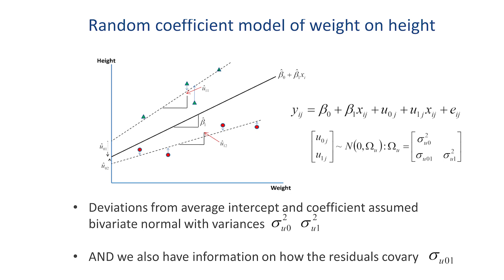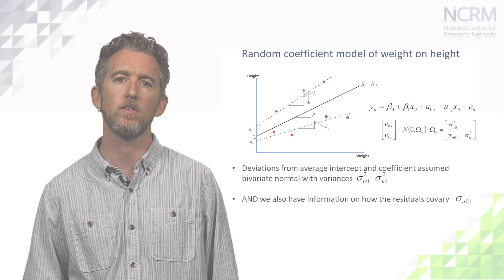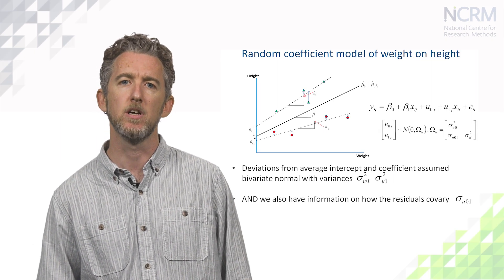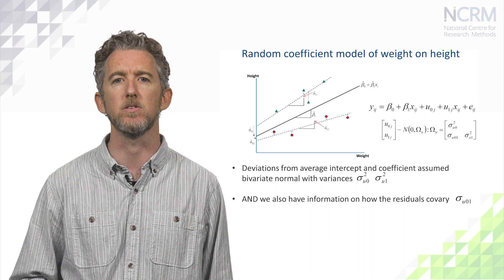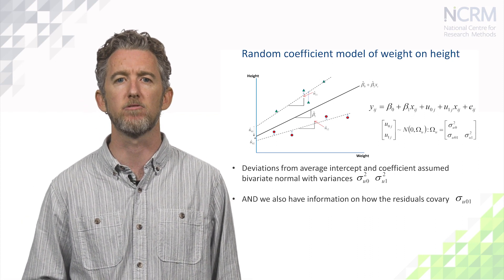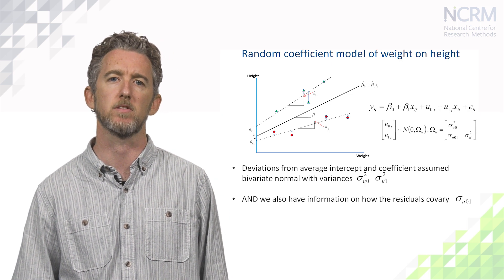The covariance term tells us how the coefficient and intercept residuals are linked. A positive value tells us that groups with a positive intercept residual tend to have a positive coefficient residual, and groups with a negative intercept residual tend to have a negative coefficient residual. A negative value tells us that groups with a positive intercept residual tend to have a negative coefficient residual, and groups with a negative intercept residual tend to have a positive coefficient residual.